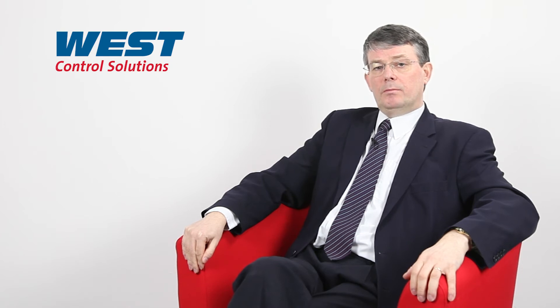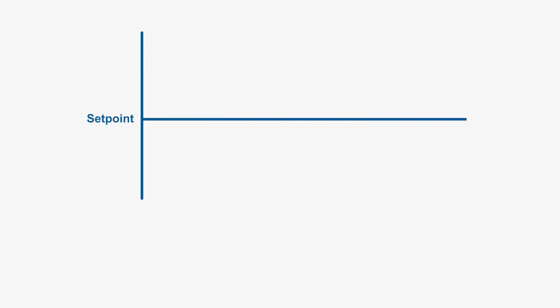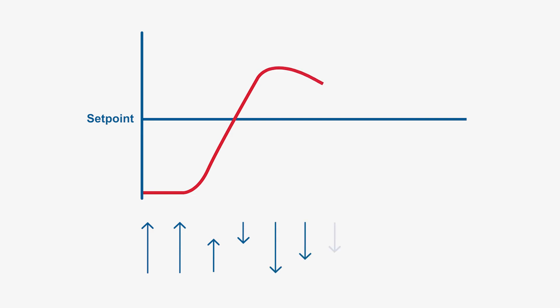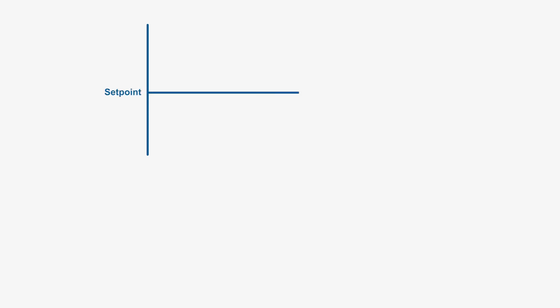We know that proportional control reduces the power as the process rises towards the set point, but if it's rising rapidly there is a danger of overshoot. Integral action will not help in this case — in fact, it would still be adding more power to the process because, although the process is rising rapidly, it is still below the set point. Only once the process has crossed the set point does the integral action reverse and start to reduce the power down.